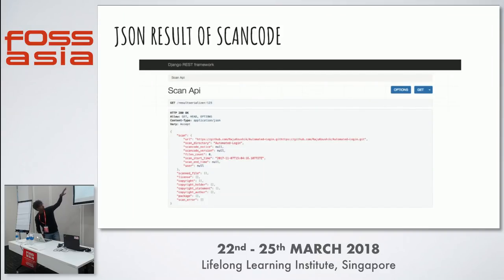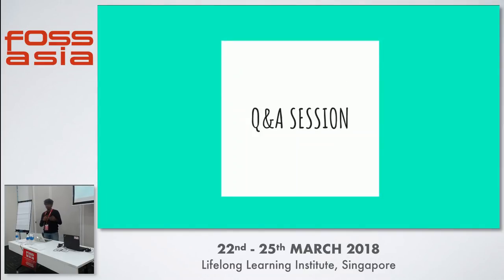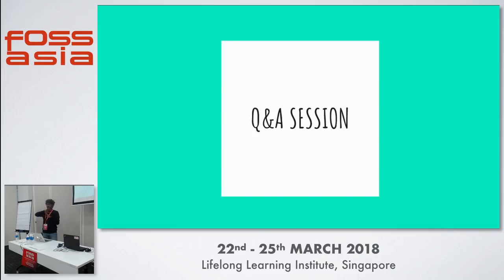This is the JSON result of ScanCode. You get the URL and a lot of information — licenses, copyrights, packages, and ScanCode errors. The project is available on GitHub. You could also add Travis CI integration so that whenever you push a project directly to your repository, it scans automatically and gives you the result.